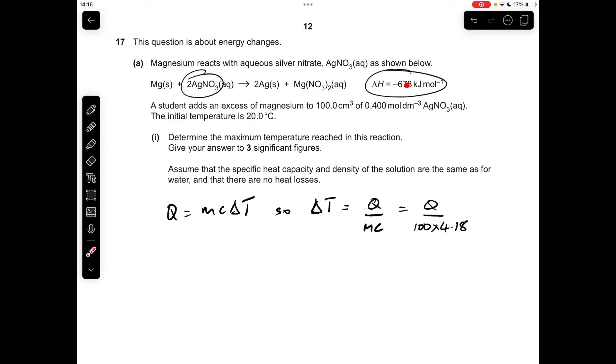What we've got to do is scale this ΔH value down to the number of moles used in the experiment. The first thing we need to appreciate is the equation - the reaction uses 2 moles of silver nitrate, so we need to half this. So that comes out at -339 kilojoules.